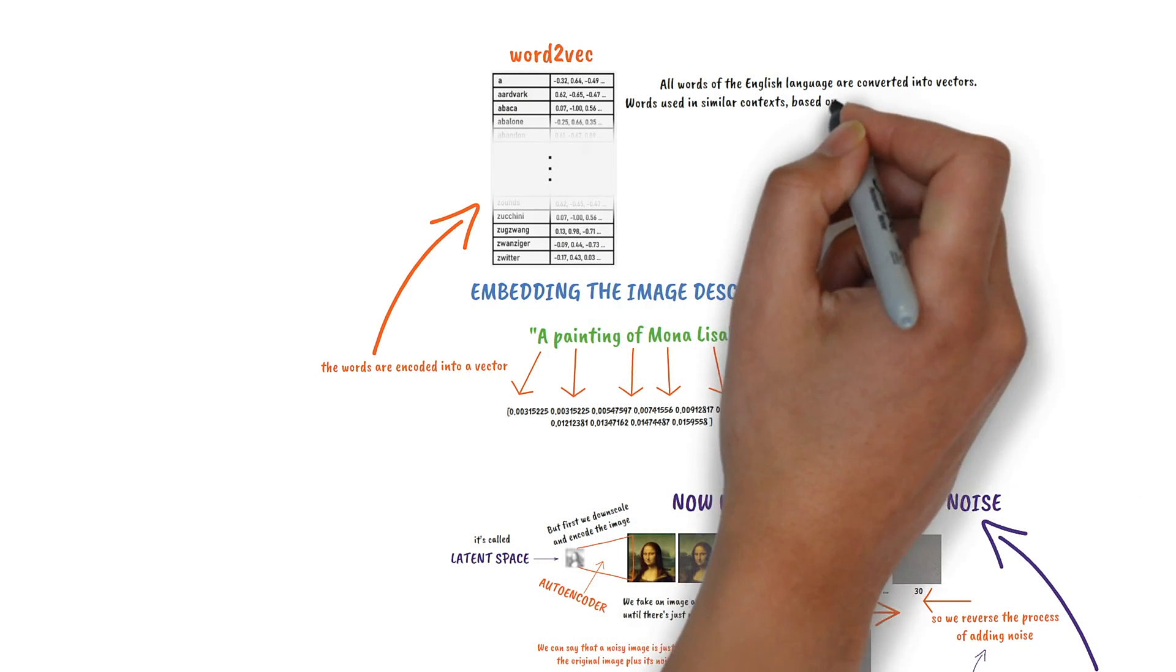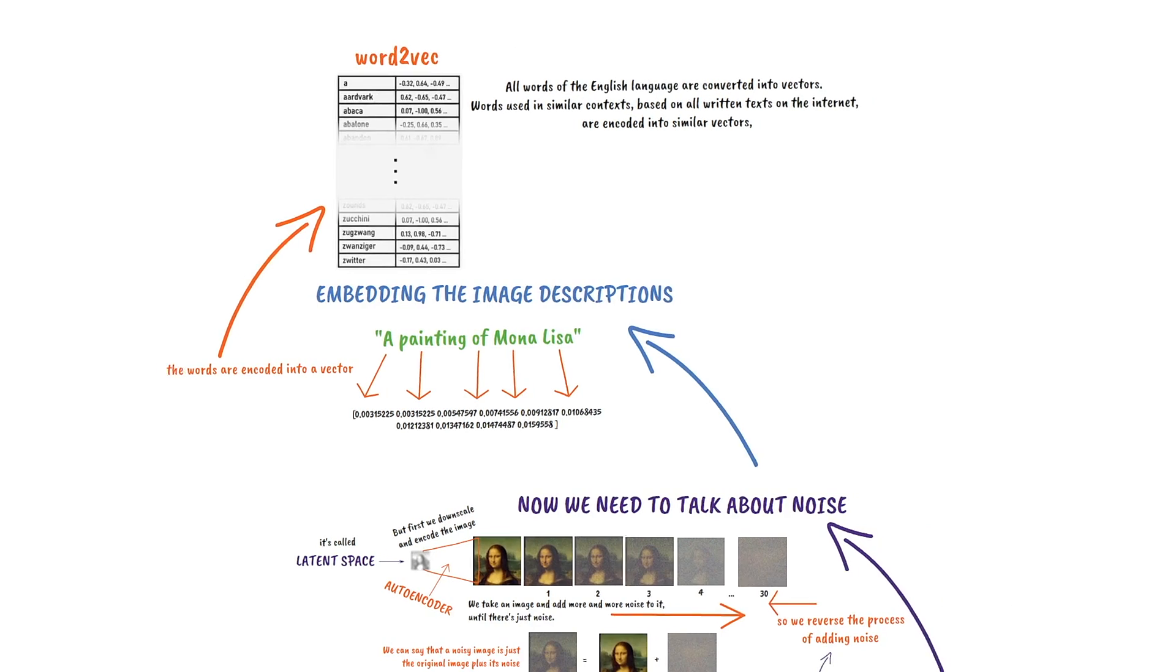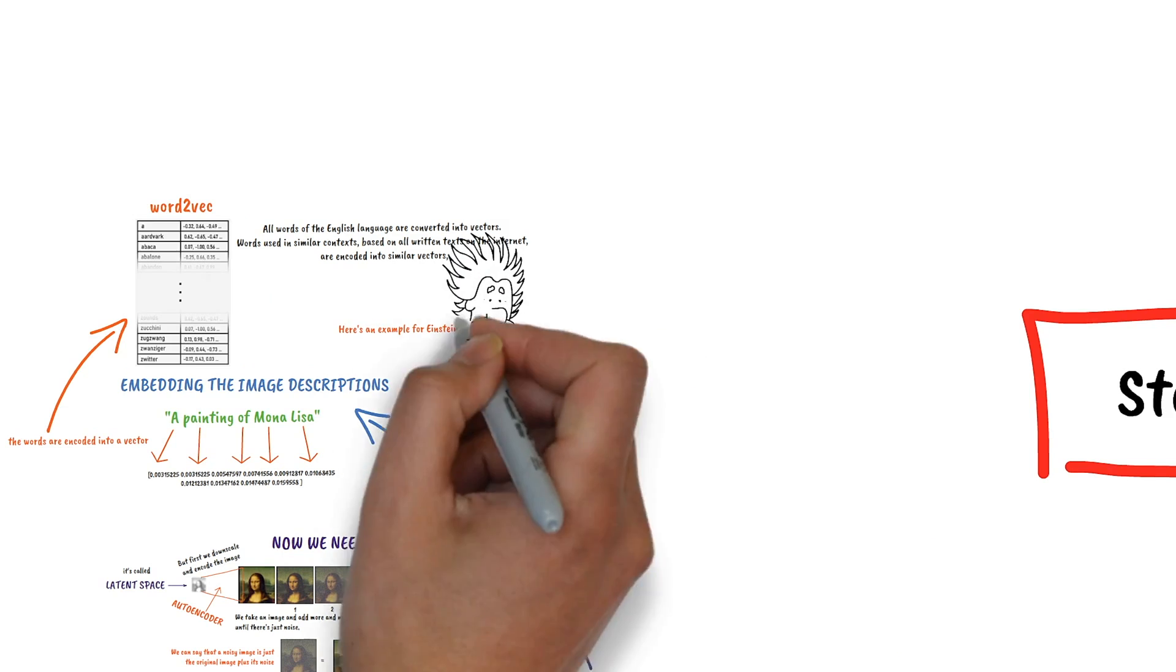And based on all available texts on the internet, words used in similar contexts have similar vectors. Here's an example for Einstein.